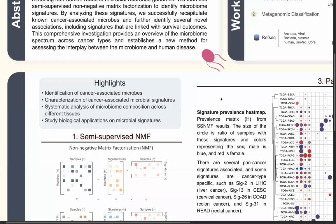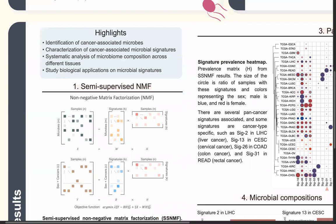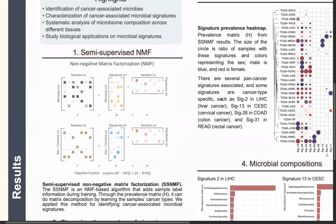After obtaining the observed frequency matrix, we decompose this high-dimensional data into key microbial signatures using semi-supervised non-negative matrix factorization (NMF). Semi-supervised NMF not only decomposes the microbial abundance matrix, but also integrates sample information such as cancer type or sex into the matrix factorization process.